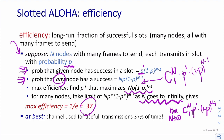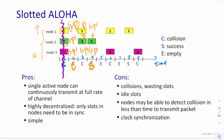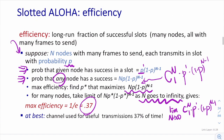So only 37% of the time slots are successful, and 63% are either collision or idle. The channel utilization of slotted ALOHA is not that good, but it is very simple — one of the earliest MAC protocols — and it is decentralized.